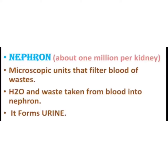The nephron is a microscopic unit that filters blood of waste — water and waste are taken from the blood into the nephron and it finally forms the urine. There are about 1 million nephrons per kidney.